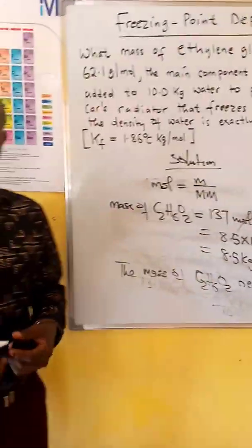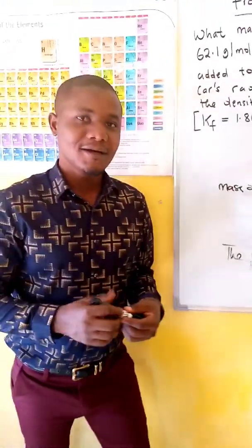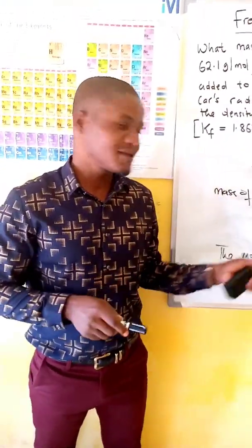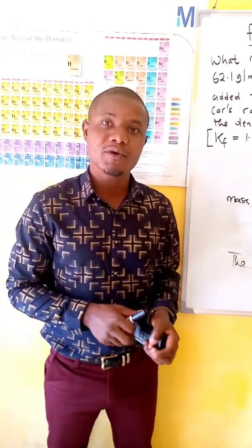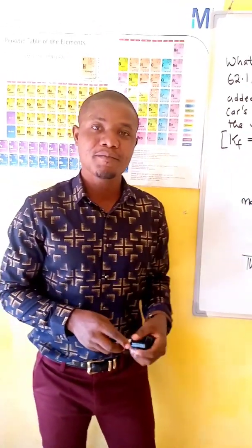So the mass of ethylene glycol needed is 8.5 kgs. So this is how we can calculate the mass of the solute. In this case, ethylene glycol.